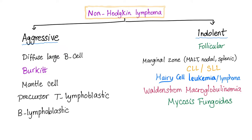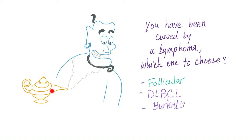Of the aggressive lymphomas, the most common is diffuse large B-cell lymphoma (DLBCL). From the indolent, the most common is follicular lymphoma. Imagine Aladdin's genie told you that you will get a lymphoma — which would you choose: follicular, diffuse large B-cell, or Burkitt's? You should choose follicular lymphoma. Why? It's indolent. Does that mean it's good to have? Of course not — it's terrible. But compared to DLBCL and Burkitt's, it's the least evil choice.